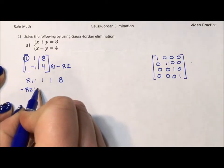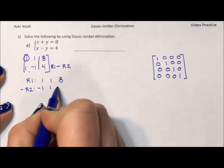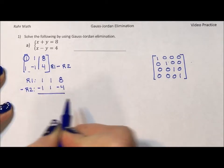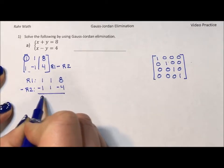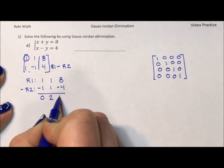All right, negative row two, negative one, positive one, negative four. When I add down, I get a zero, a two, and a four.